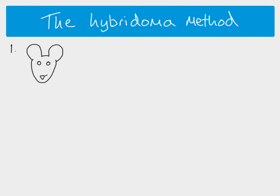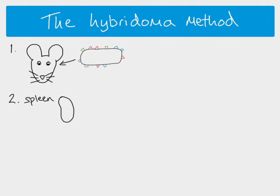The first step is to take your mouse and inject it with the antigen you're interested in — in this case a bacterial cell, though any non-self antigen will work — and it will invoke the immune response, triggering the mouse to produce plasma cells with antibodies matching the non-self antigen we are interested in producing. Once the mouse's immune system has done its thing and produced lots of plasma cells, we go to the spleen, where you find a lot of the lymphocytes and plasma cells, and extract them. We don't have the technology to only extract the plasma cells of interest, so we just take all of them.